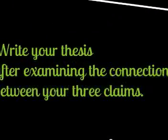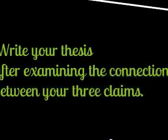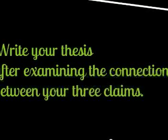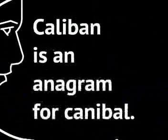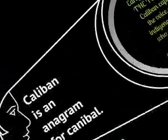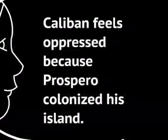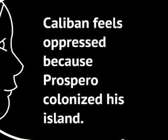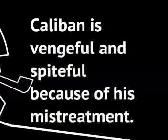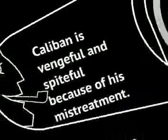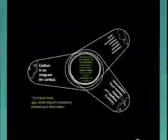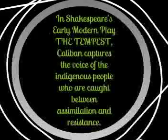Now that I have my claim, I'm ready to begin thinking about my thesis. How do I develop a thesis? It's important to note that even though I found one claim, there are usually three claims. Write your thesis after examining the connections between your three claims. Based on that passage, here are three possible claims: Caliban is an anagram for cannibal; Caliban feels oppressed because Prospero colonized his island; and Caliban is vengeful and spiteful because of his mistreatment. These three claims together help me to narrow in and identify my thesis.